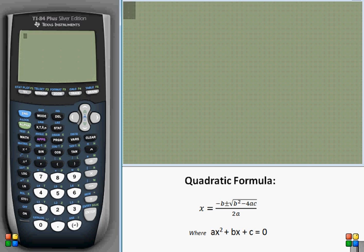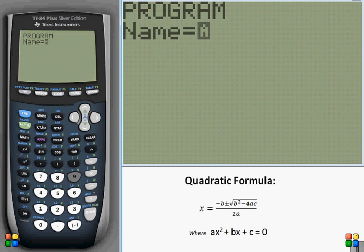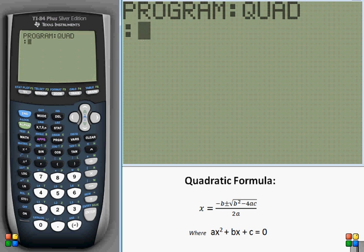So first thing you have to do is create a new program. Go to PRGM, go over to New, and you can name it Quad for quadratic because you can't fit quadratic in there, it's more than 8 letters. Press enter.